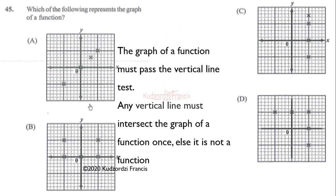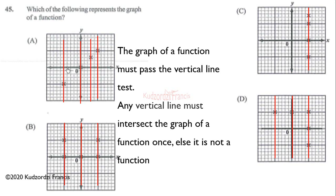Drawing vertical lines across the graphs, the first graph fails the test because a vertical line hits two points. The second also fails for the same reason. For the remaining graph, no vertical line intersects it at more than one point, so it is the graph of a function. The correct answer is A.